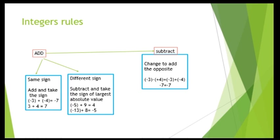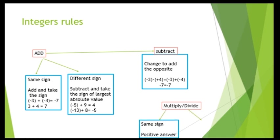Next comes multiplication. Same sign: if you multiply two numbers with the same sign, you get a positive answer. Different sign: if you multiply or divide numbers with different signs, you get a negative answer. This is the main concept of integer rules.